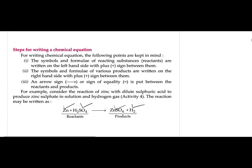We studied the steps for writing a chemical equation: on the left-hand side you write the reactants, then you put an arrow pointing to the right-hand side, and on the right side of the arrow you write the products. You put a plus sign between the reactants if there are more than one, and between the products if there are more than one.